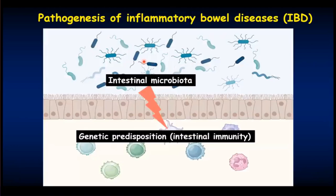Recent evidence has indicated that both genetic predisposition, particularly intestinal immunity and intestinal microbiota, both contribute to the pathogenesis of inflammatory bowel diseases. The complicated interaction between the intestinal immunity and microbiota contributes to the development of these inflammatory diseases.